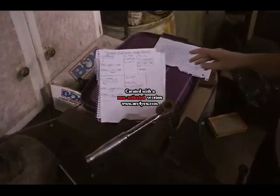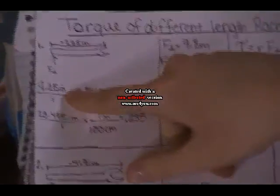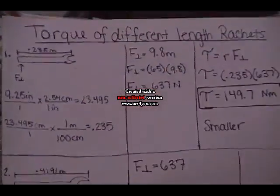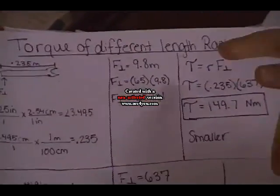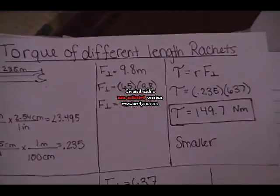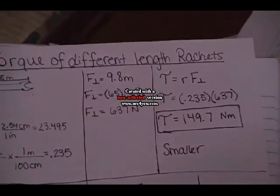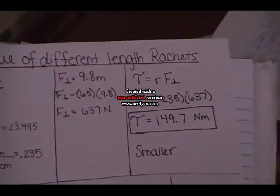Going back to our sheet, we must convert the 9.25 inches into meters. We then have to find the force and use force gravity, which is 9.8 times mass. My mass is 65 and then you multiply that by 9.8 and get 637 newtons.